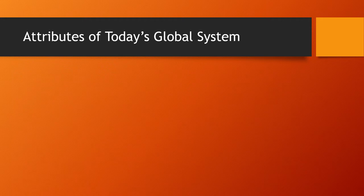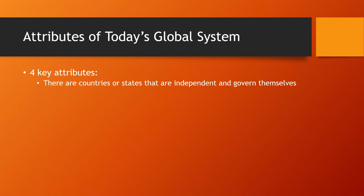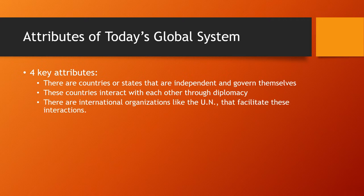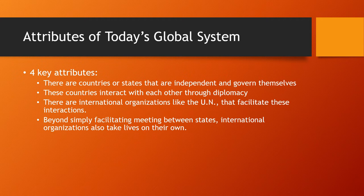Here are the attributes of today's globalist systems. There are four. First, there are countries or states that are independent and govern themselves. Number two, these countries interact with each other through diplomacy. Number three, there are international organizations like the UN that facilitate these interactions. And number four, beyond simply facilitating meetings between states, international organizations also take on lives of their own.